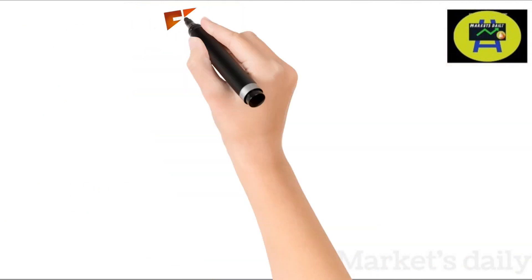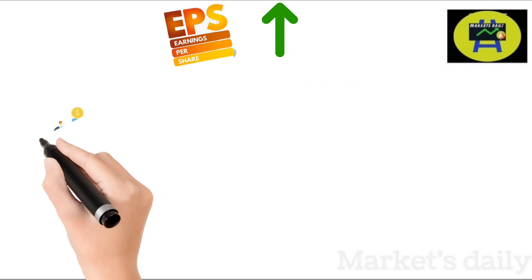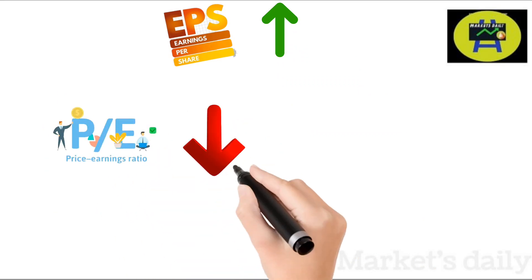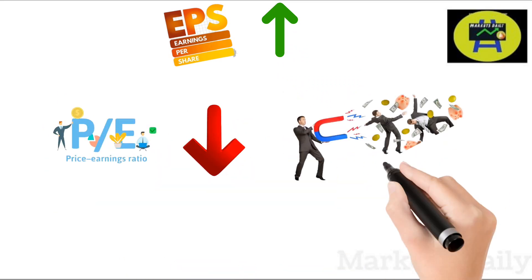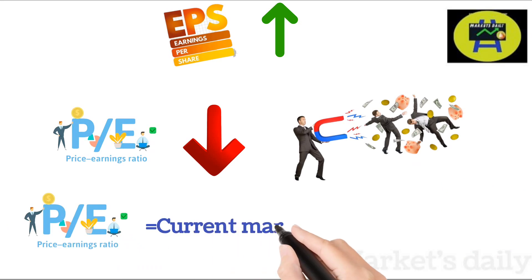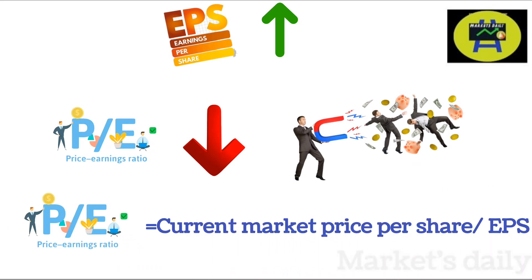What will happen if EPS increases? If the EPS increases, the P-E ratio goes down, which will attract more investors. The P-E ratio is calculated as the market price divided by EPS. I will talk about the P-E ratio and EPS in detail in my upcoming videos on fundamental analysis.